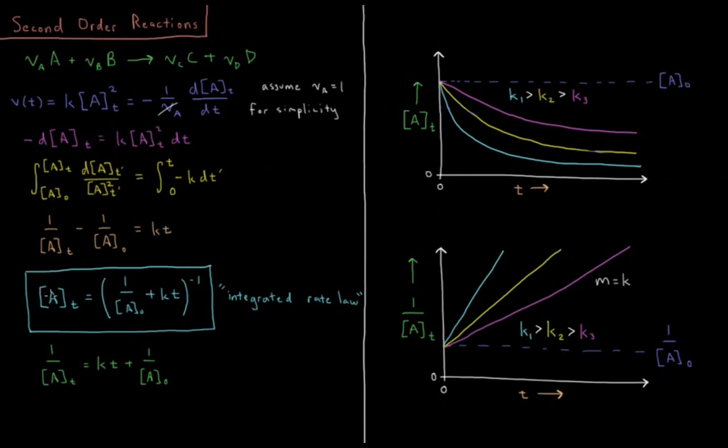or our concentration of our reactant A with respect to time, or our concentration over time, is equal to 1 over, so I have this entire quantity to the minus 1, 1 over 1 over A naught plus K T. So this is our integrated rate law for second order reactions. It tells us how the concentration of a reactant or product varies over time for a second order reaction.